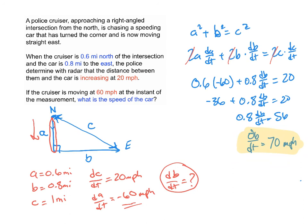Same strategy as before: draw a picture, label anything changing with a variable, get organized and list information along with what you're trying to find. Then that crucial step — write an equation that relates the variables so you can do the calculus via implicit differentiation. Plug the numbers in and solve for the missing quantity, which is usually a rate. You've got about four problems to work on, so give those a go. Take care.